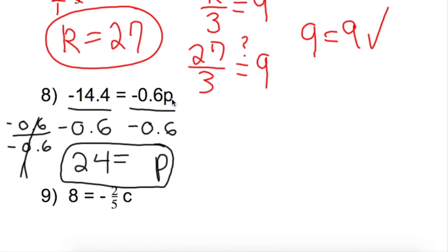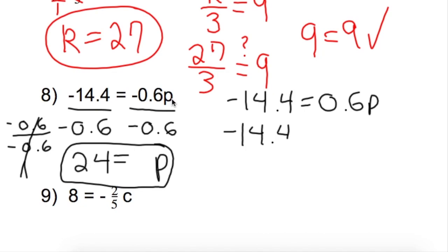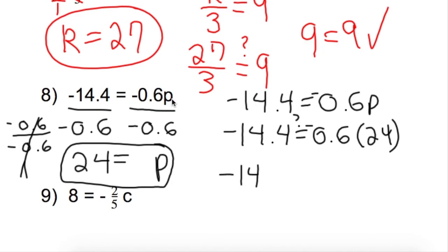Are we correct? Let's find out. Our original problem was negative 14.4 equals negative 0.6p. Rewriting it with our solution of 24: is negative 0.6 times 24 equal to negative 14.4? The answer is yes. So negative 14.4 equals negative 14.4 — the correct solution is, in fact, 24.